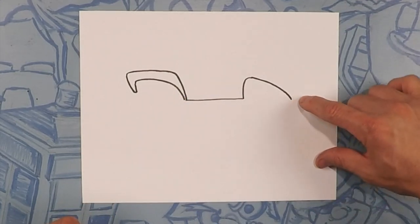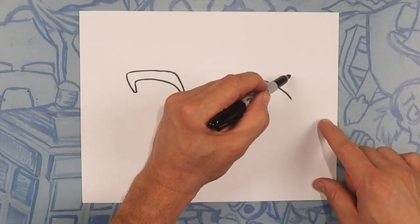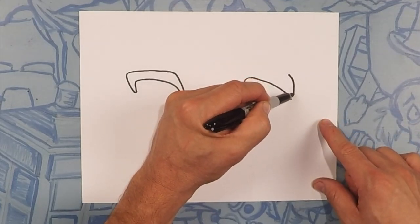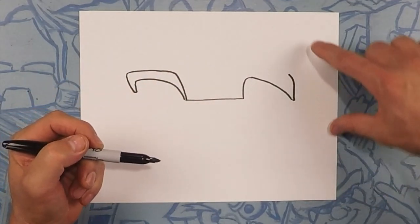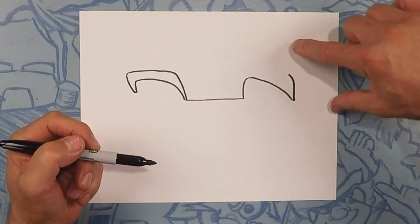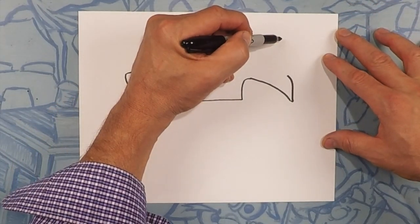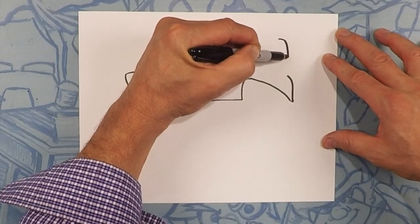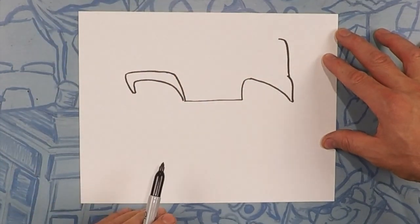Now from here we're going to draw the back side of the truck. It's kind of going to be like a little curve first and then again we're going to do this same type of curve but it's almost going to be like a step up. So curve and down like that.